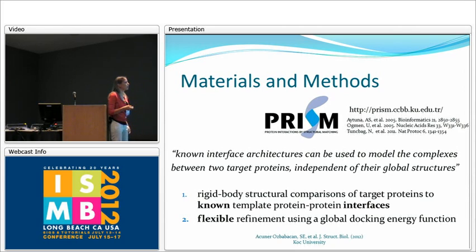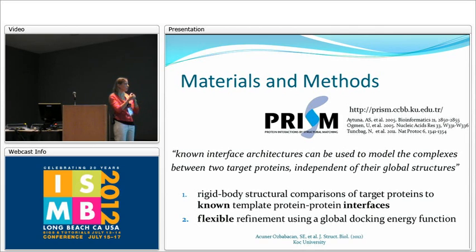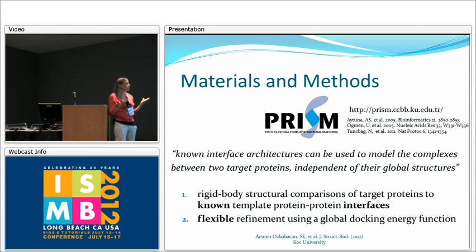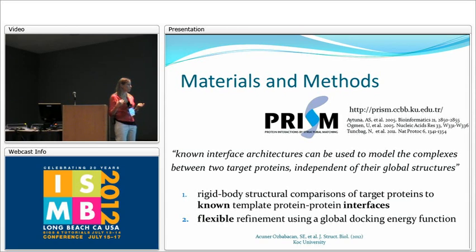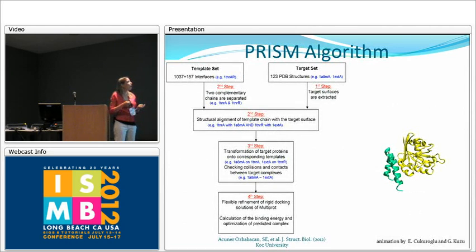PRISM stands for Protein Interactions by Structural Matching. This algorithm bases its predictions on the idea that known interface architectures — the interfaces of protein complex structures — can be used to model other complexes between any two target proteins, independent of their global structures. The algorithm has mainly two steps: first, rigid body structural comparisons of target proteins and known template interfaces are done; second, solutions are flexibly refined using global docking energy functions.